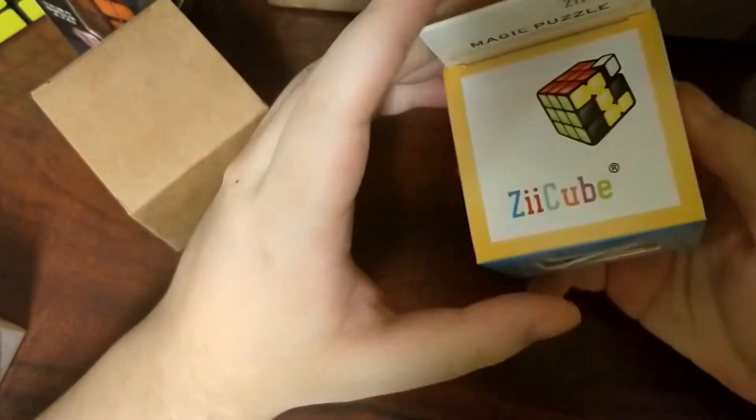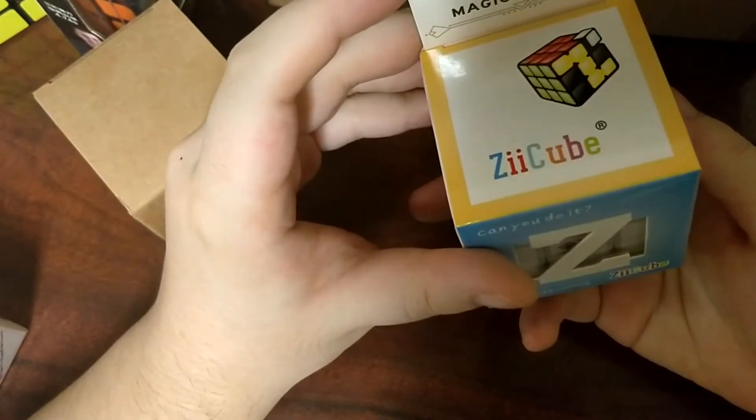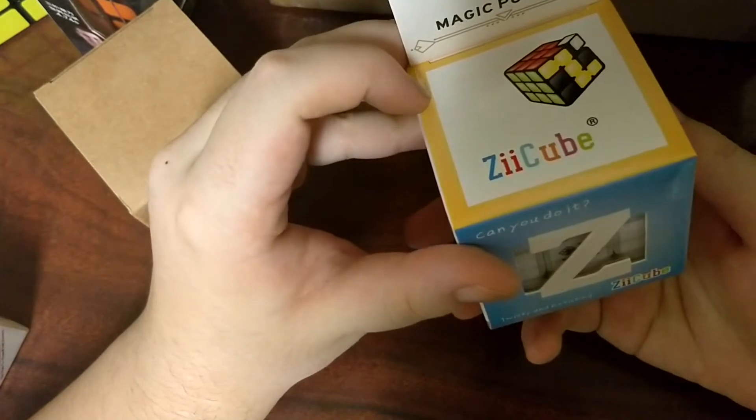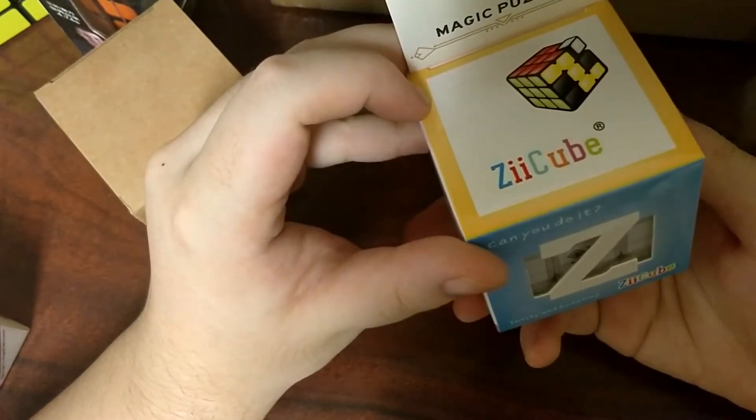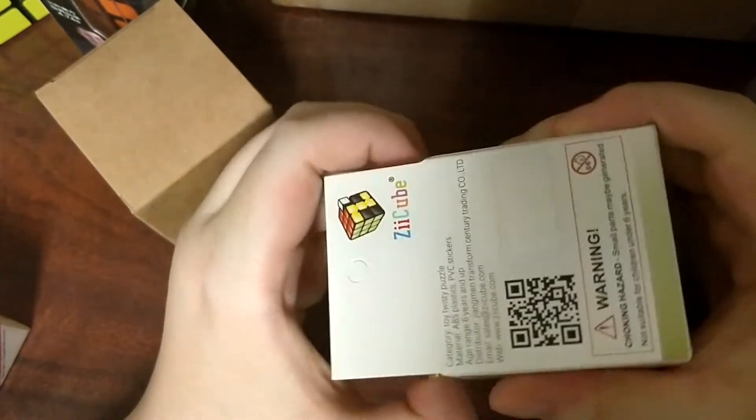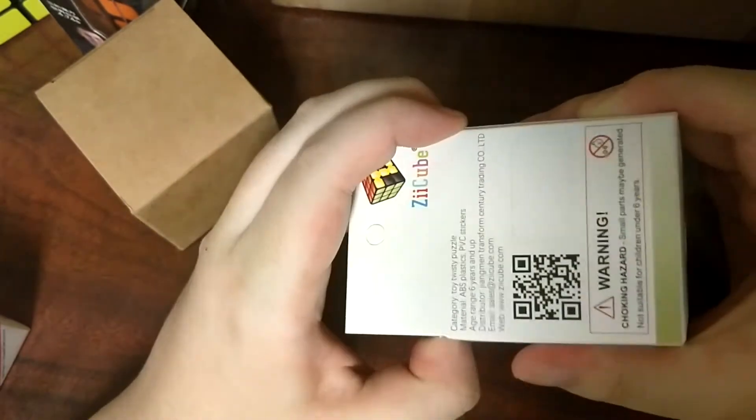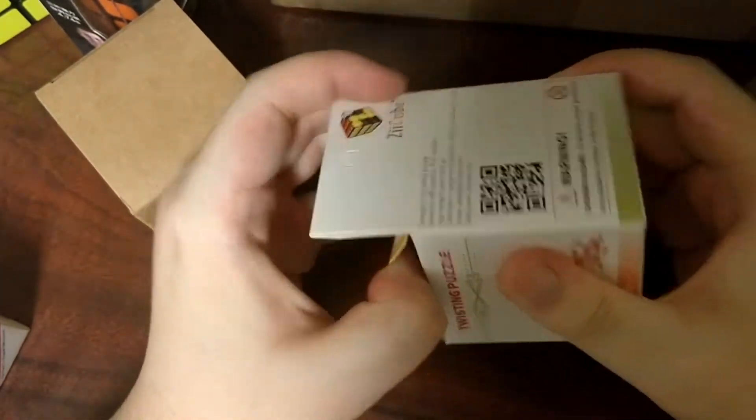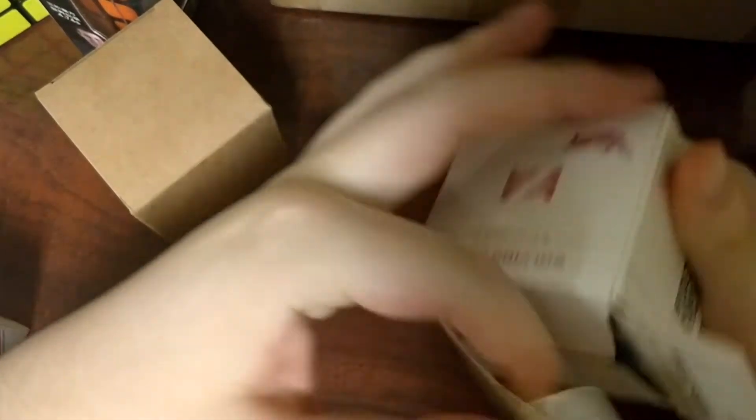Okay, now for the Diane cube. Now, I think this is the Diane 57mm Zanchi. Let's see. Yeah. Let's try to get this Zcube box open. Here it is.